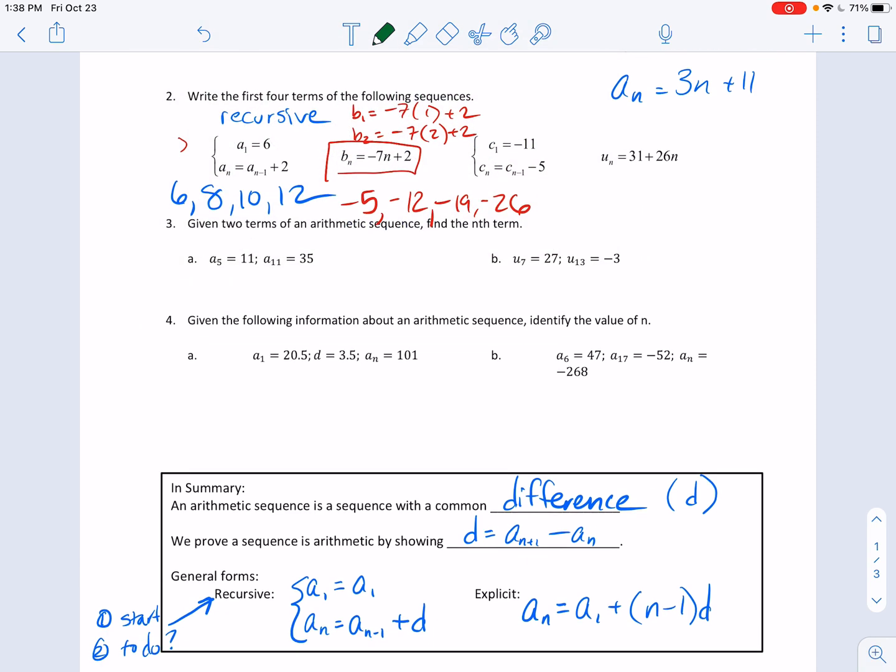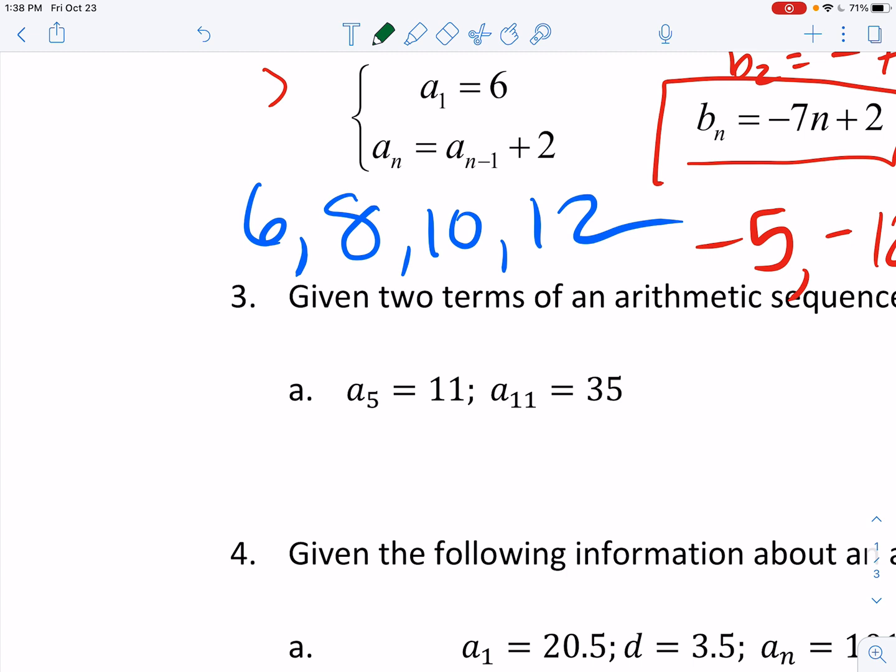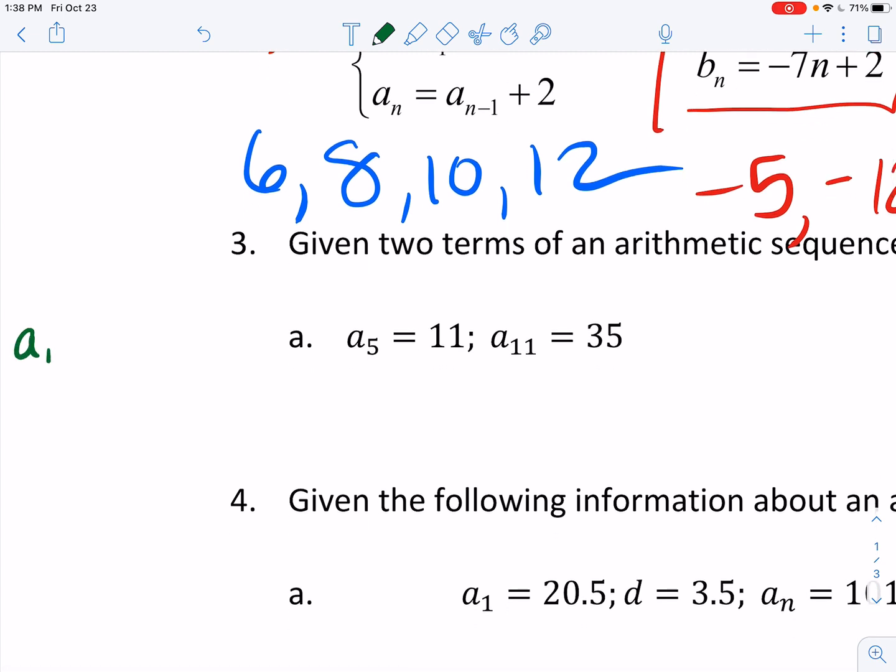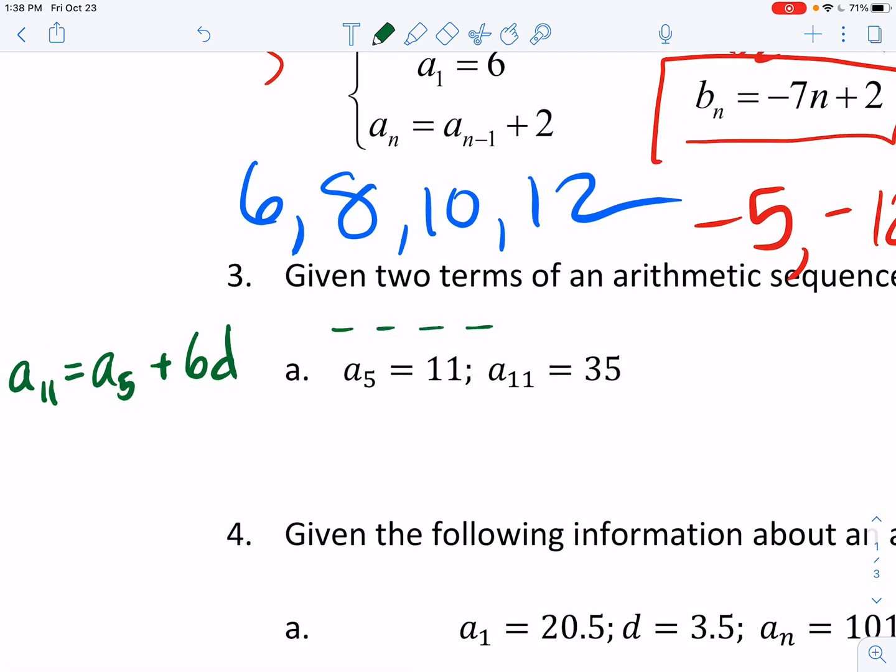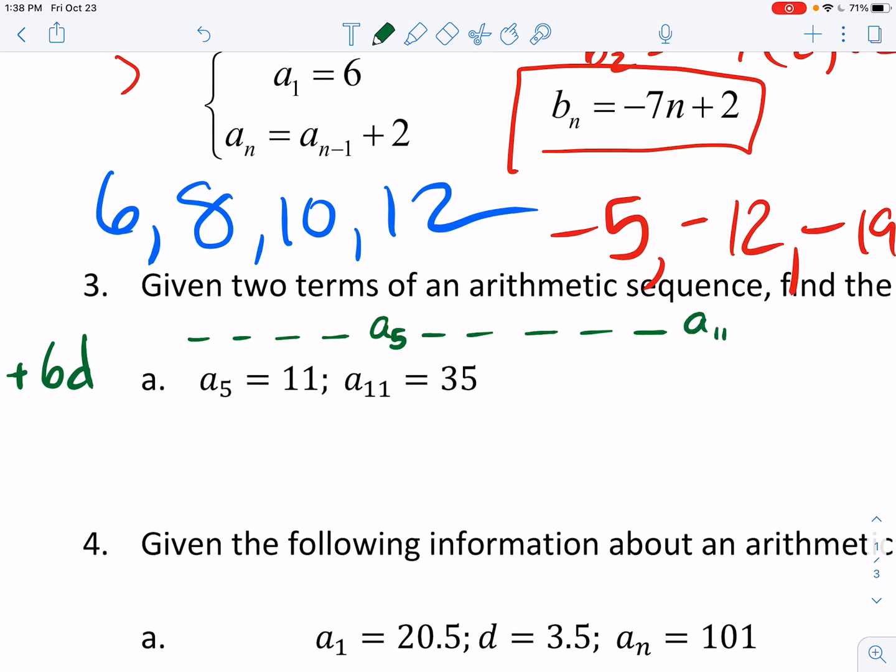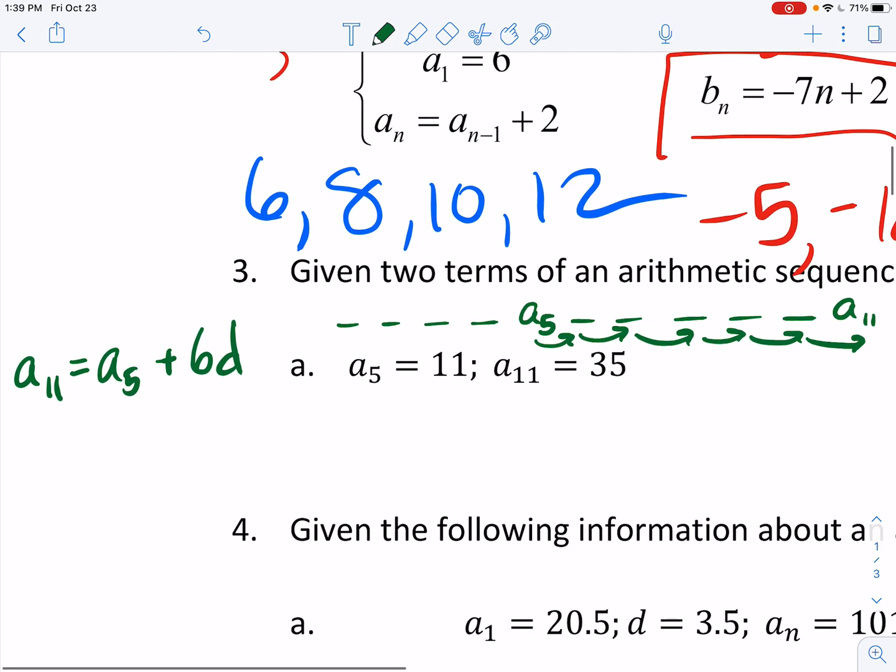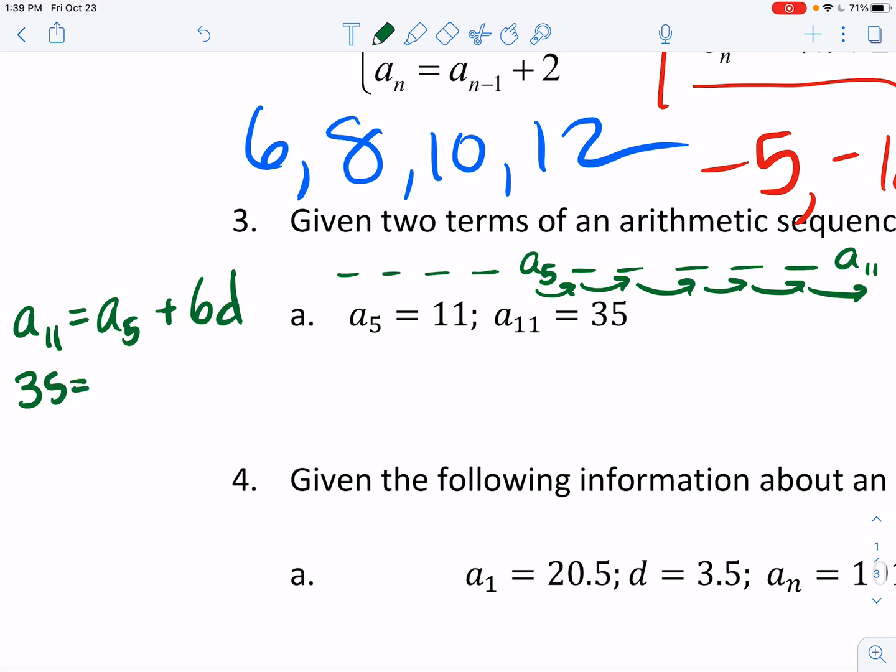Give two terms, find the nth term. On this one, I will go ahead and do this one before I set you free. This is, what I know, A sub 11 would be equal to A sub 5 plus 6 times the common difference. So one way I can think about that is, here's the first term, the second term, the third term, the fourth term. The fifth term is what I know, the 6, 7, 8, 9, 10, and the 11th term. Notice I've added the common difference 1, 2, 3, 4, 5, 6 times to get there. Also, 11 minus 5 is 6. So I can plug into this equation, 35 is equal to 11 plus 6d. That's 24 is equal to 6d, d is equal to 4.